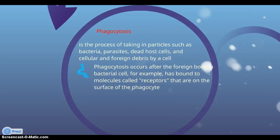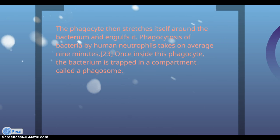Phagocytosis occurs after the foreign particle, for example a bacterium, has bound to molecules called receptors on the surface of the phagocyte. The phagocyte then stretches itself around the bacteria and engulfs it. Phagocytosis of bacteria by human neutrophils takes on average 9 minutes. Once inside the phagocyte, the bacteria is trapped in a compartment.